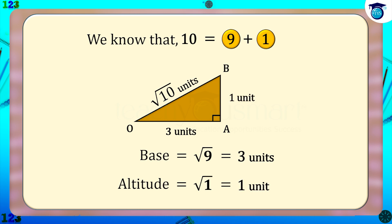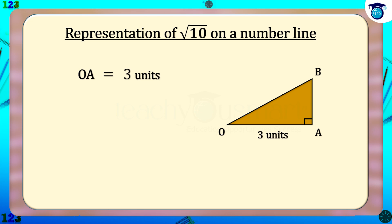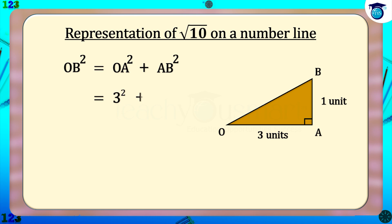Now let us prove this result by Pythagoras' theorem. Here we choose OA = 3 units and AB = 1 unit. By Pythagoras' theorem: OB² = OA² + AB² = 3² + 1² = 9 + 1 = 10. Therefore OB = √10 units.